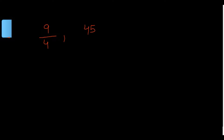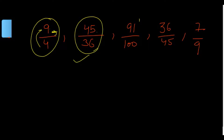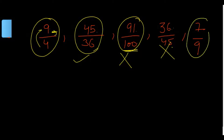Let's take some more examples and identify which are proper and which are improper. Nine by four — numerator is greater than denominator, so this is an improper fraction. Forty-five by 36 — again an improper fraction. Ninety-one by 100 — not improper because the numerator is smaller. Thirty-six by 45 — numerator is smaller, not improper. Seven by nine — not improper. Only nine by four and 45 by 36 are improper fractions.